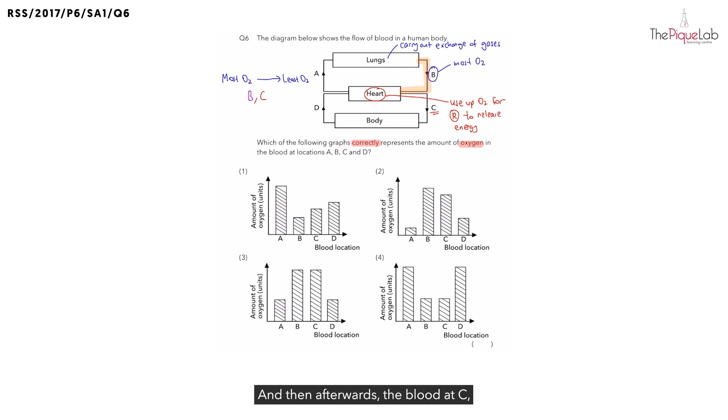And then afterwards, the blood at C, where does it go to? We can see the blood at C goes to the body. And the body, same thing as the heart. Does it need oxygen? Definitely. So the body is also going to use up oxygen for respiration to release energy for life processes.